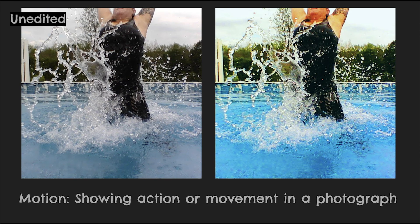Motion is when you're showing action or movement in a photograph. For this photo, I put my Chromebook on the edge of the pool, set the timer, backed far away so that I wouldn't get wet, and then jumped out of the pool during the summertime. The camera caught me right in the moment of jumping.